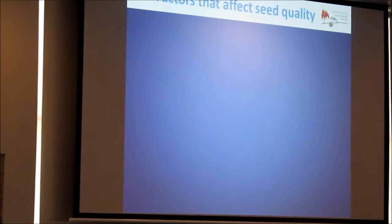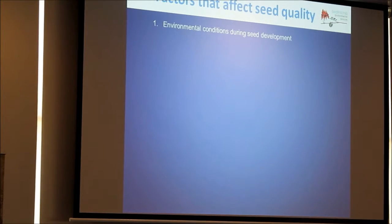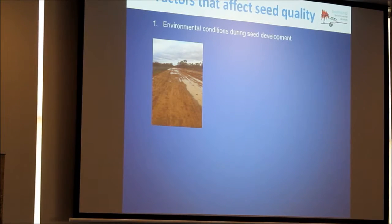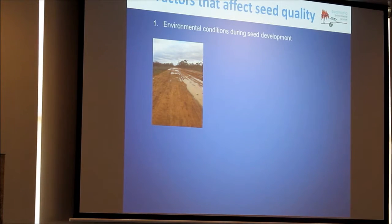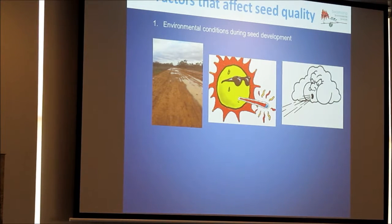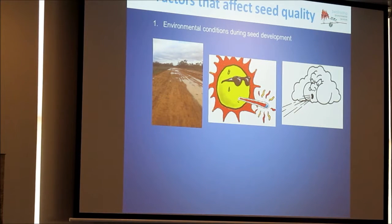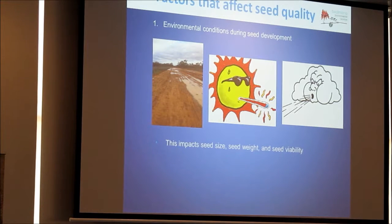There are a number of factors that affect seed quality when it comes to your collections. The first one is environmental conditions during seed development. Do you have overcast conditions and a lot of rainfall? Do you have really hot days? Do you have really gusty days? These all really impact the ripening process and how long the seeds have got to mature. It impacts your seed size, seed weight and viability.